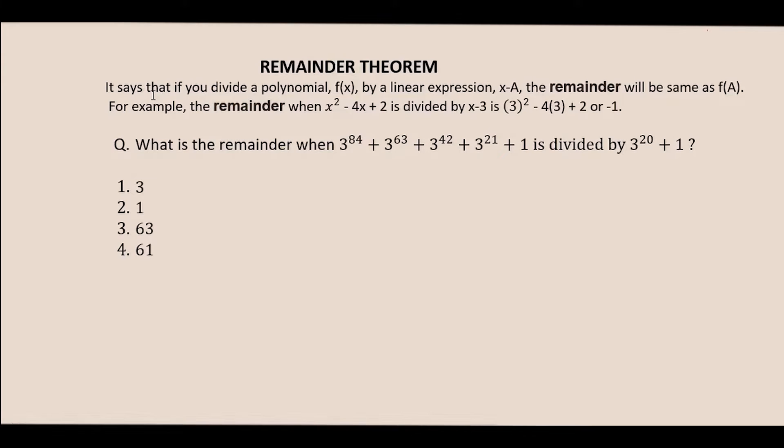Remember, the remainder theorem says that if you divide a polynomial of this kind, like x squared plus 4x plus 2 or something, you divide this kind of polynomial by x minus 3, you either get no remainder or you get some remainder. If it's not a divisor of this, then in that case, if you put the value of x equals 3 here, you will get the remainder. For example, here I can put 3 squared plus 4 multiplied by 3 plus 2. What would I get? I would get 9 plus 12 plus 2, which is equal to 23.